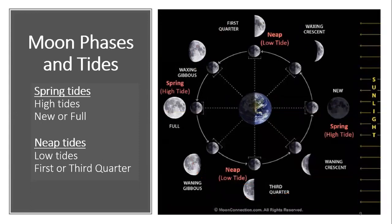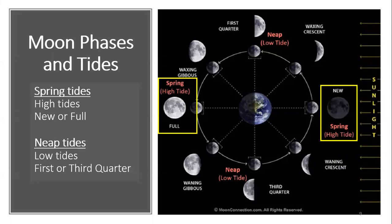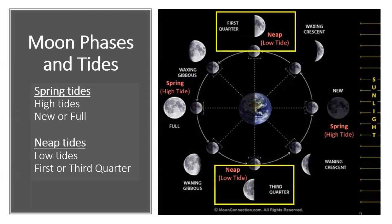Moon phases and tides. Moon phases are directly linked to tidal regimes. Spring tides, or high tides, are associated with the new and full moons. Neap, or low tides, are associated with the first and third quarter moons.